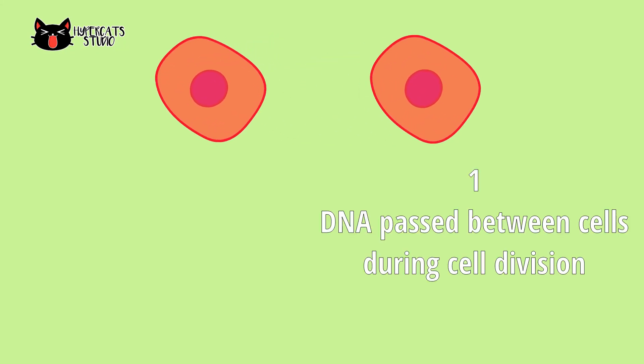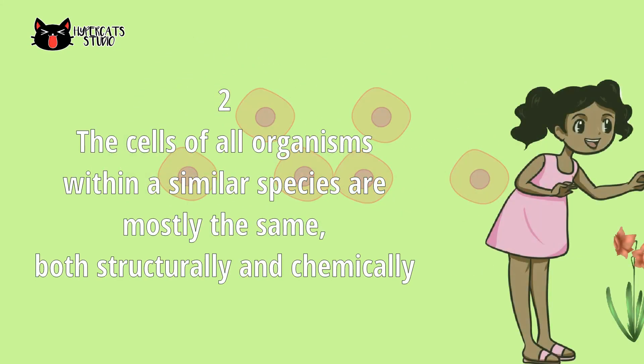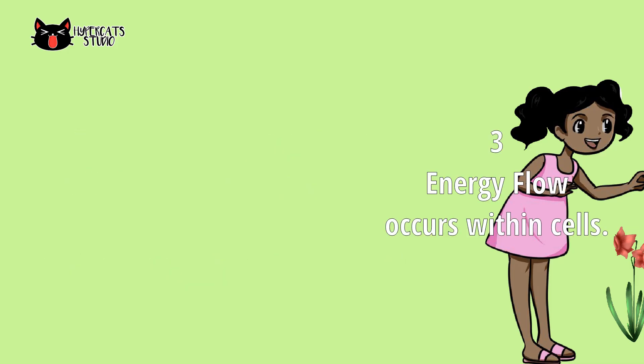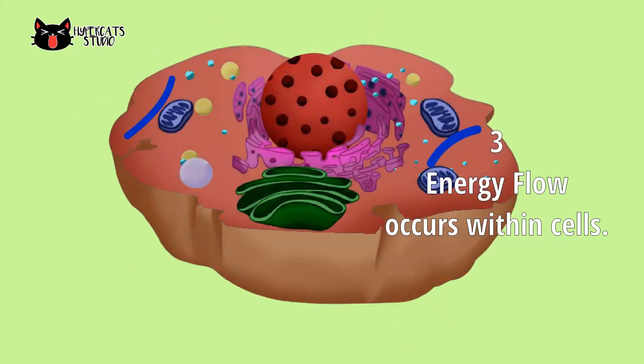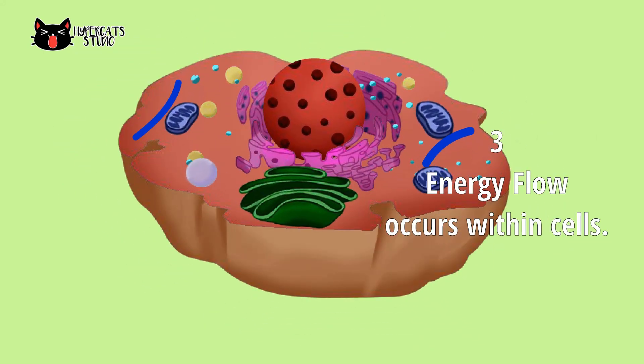The first addition is that DNA is passed between cells during cell division. Second, that the cells of all organisms within a similar species are mostly the same, both structurally and chemically. And finally, that energy flow occurs within cells.